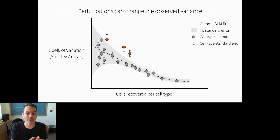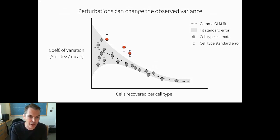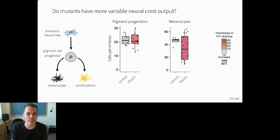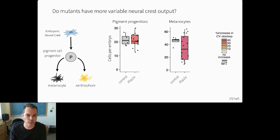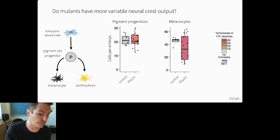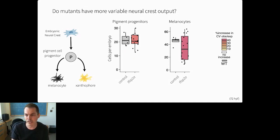To quantify whether losing either gene increases variance of neural crest output, we borrowed techniques from bulk RNA-seq. Testing whether a perturbation alters variance in cell frequencies requires addressing the mean-variance relationship common in count data. We fit a generalized linear regression of mean against coefficient of variation with a gamma distribution response, and account for uncertainty by fitting a beta-binomial distribution to each cell type's relative abundances across embryos, giving confidence intervals on their CV. We can then ask whether a given cell type is significantly more variable than typical for its abundance level, and whether knocking out a gene makes a cell type more variably abundant—accounting for changes in mean when testing for differences in variance. This simple statistical method phenotyped the TFAP2A mutant as having far more variable pigment cell output than wild type.